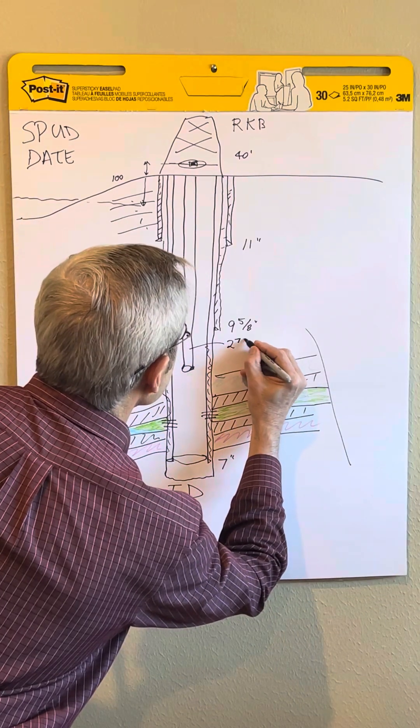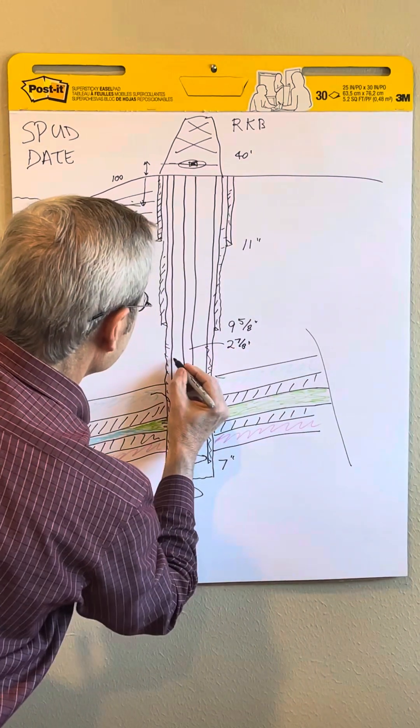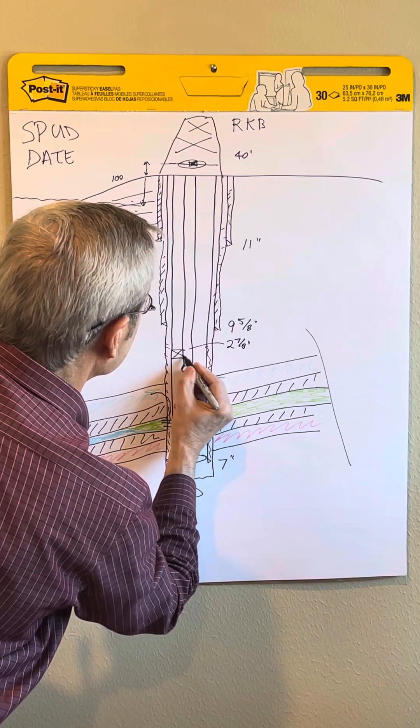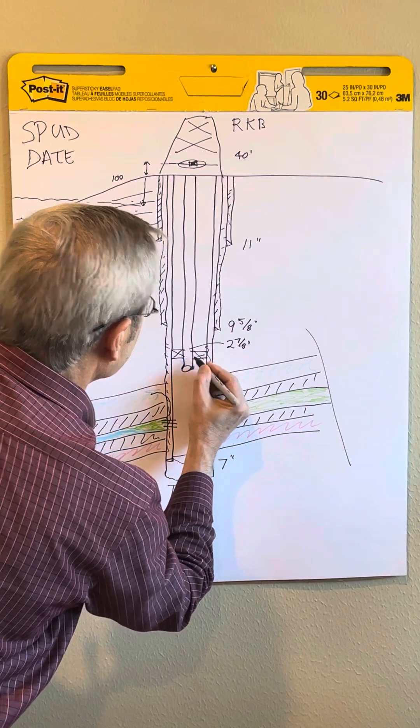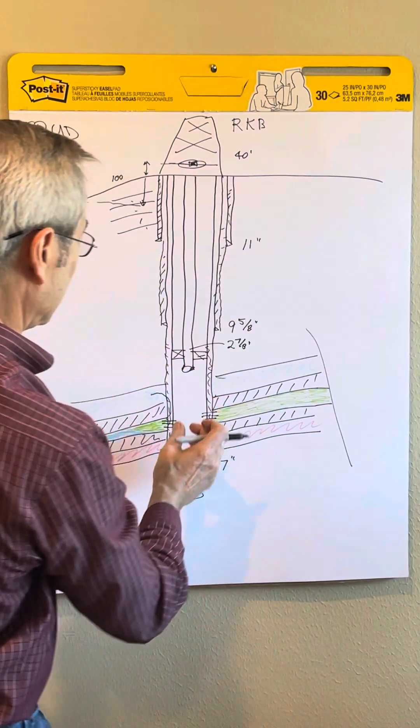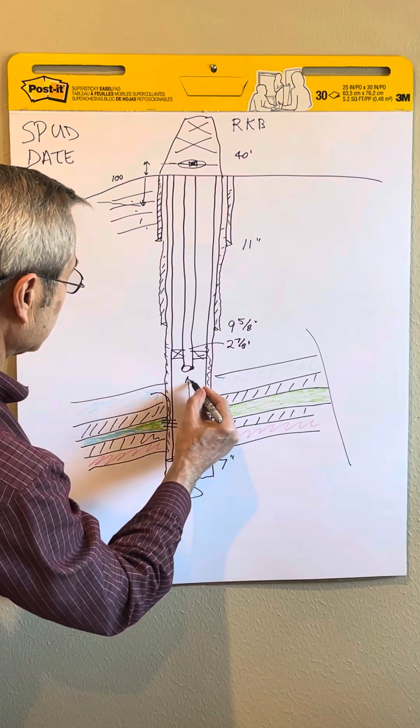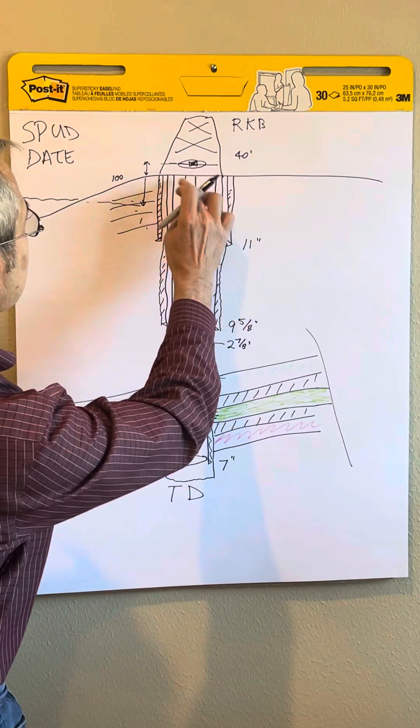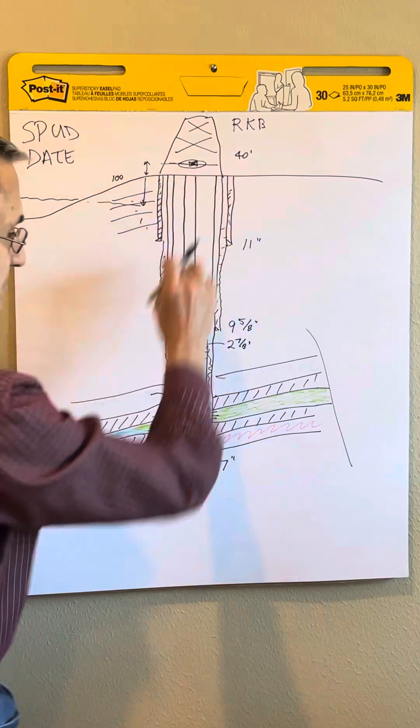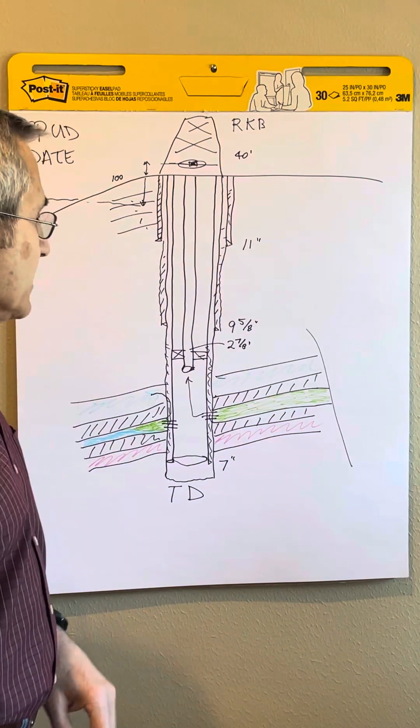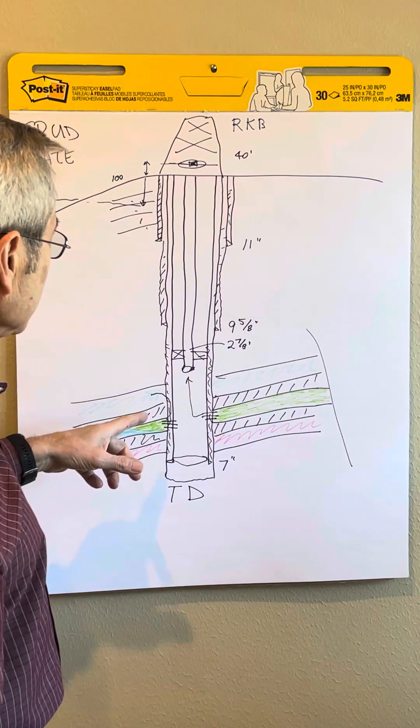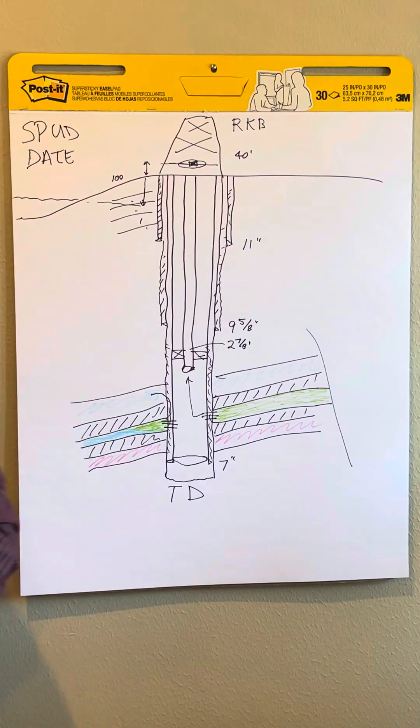Then we put a packer, which is a mechanical device that seals the annulus of the well. As the pressure comes up and the oil goes up, it won't get here where it could have problems blowing out the well if that high pressure gets up there. That's how it's done. Hope that was interesting.